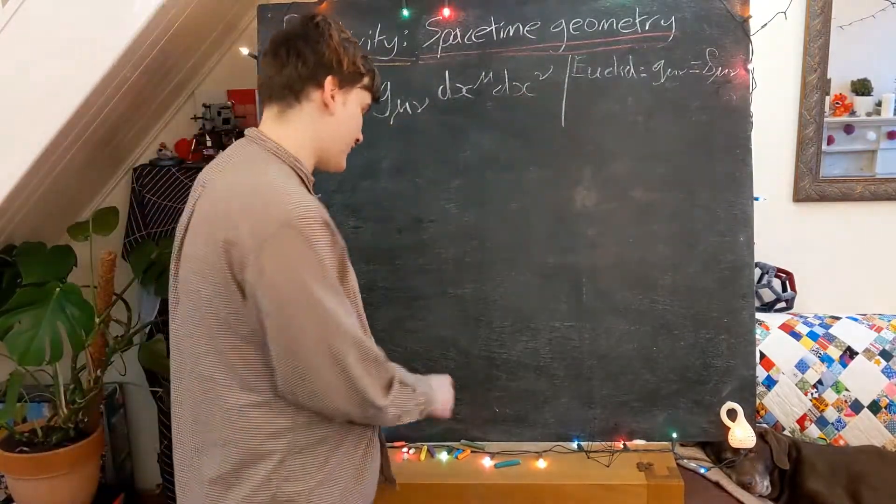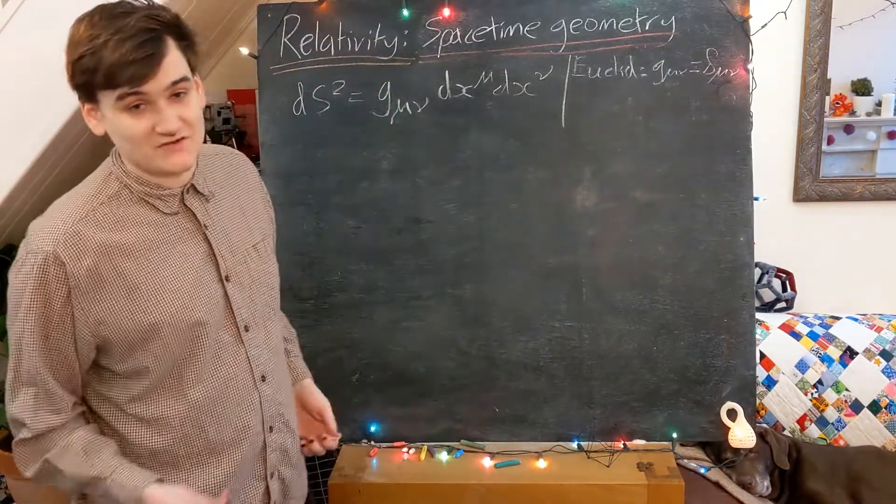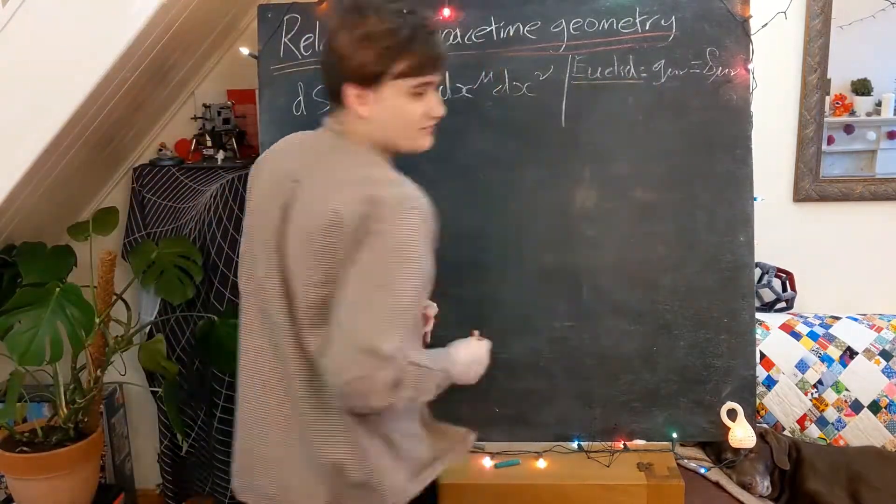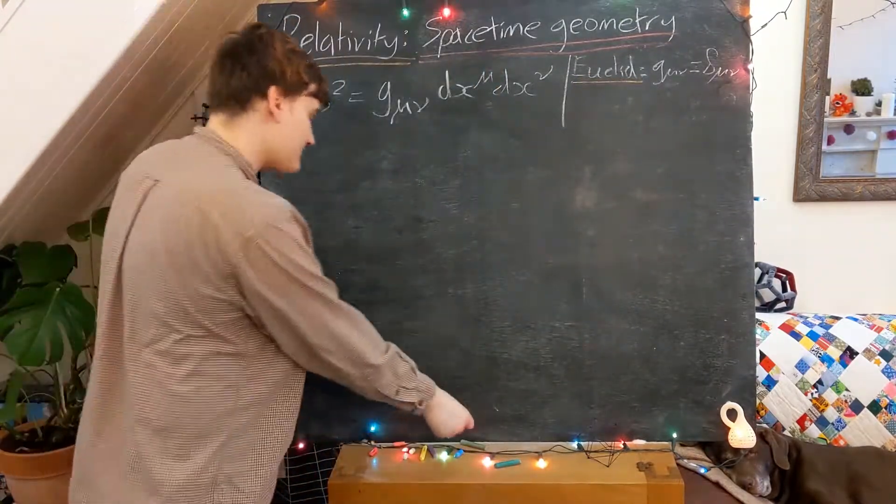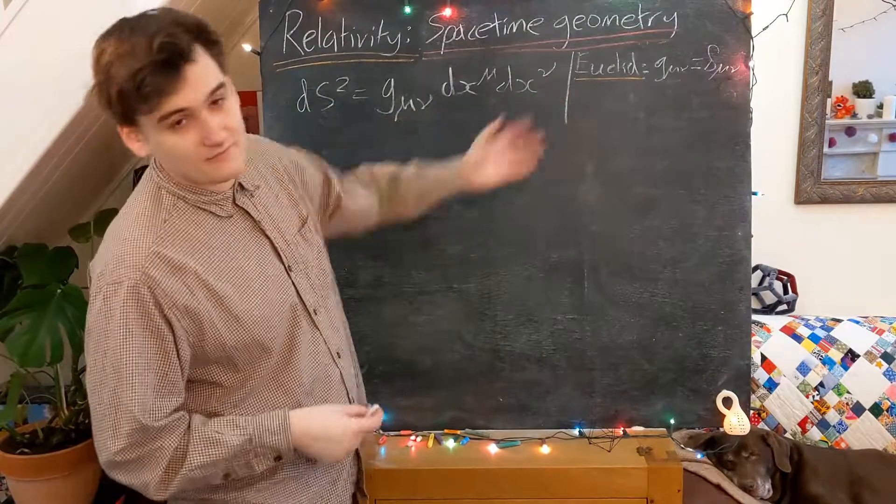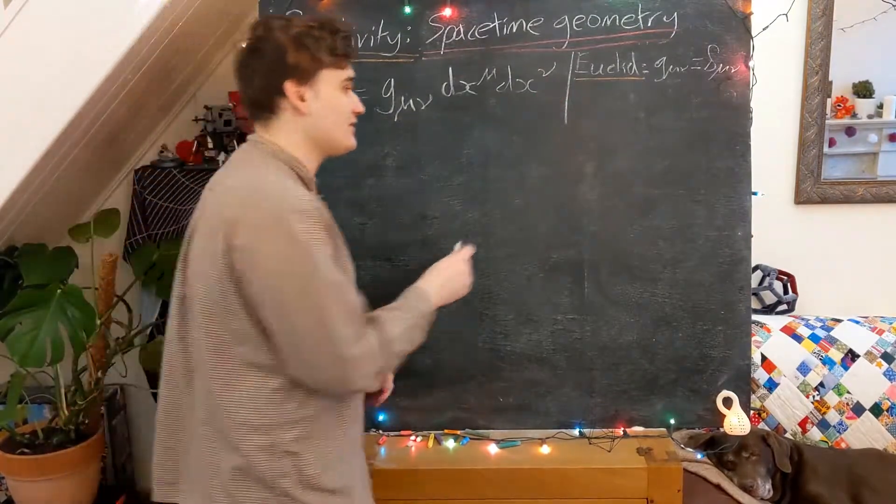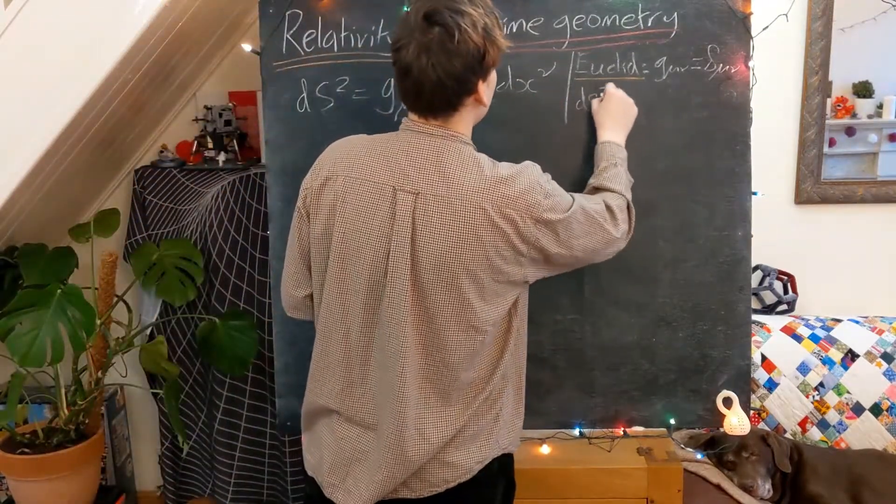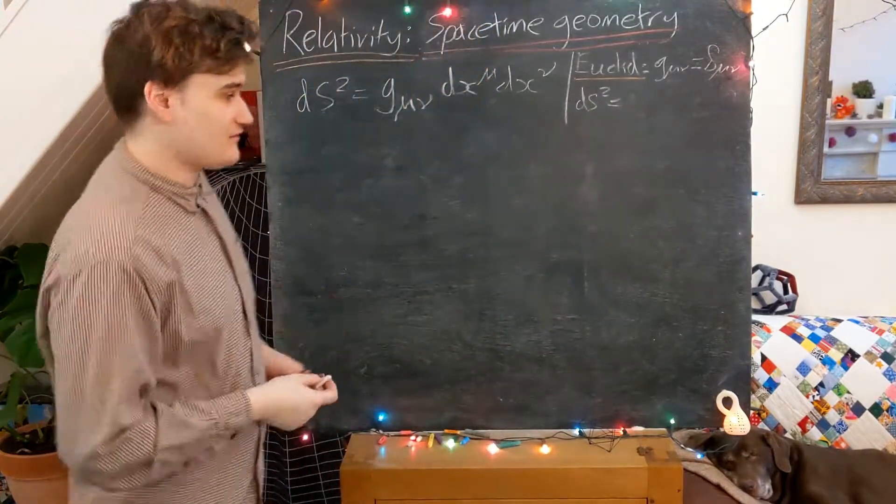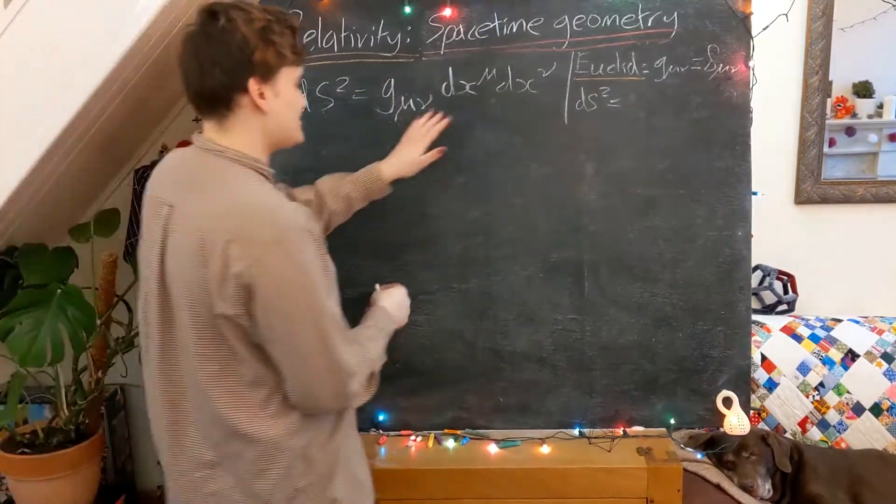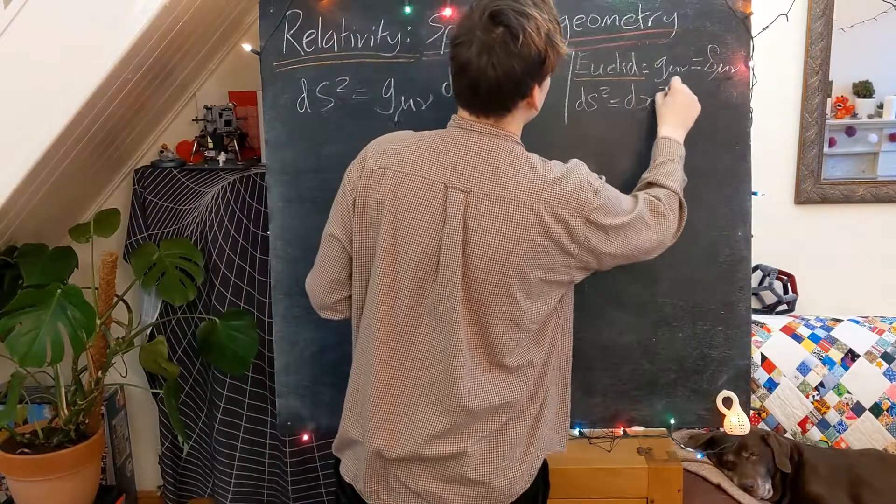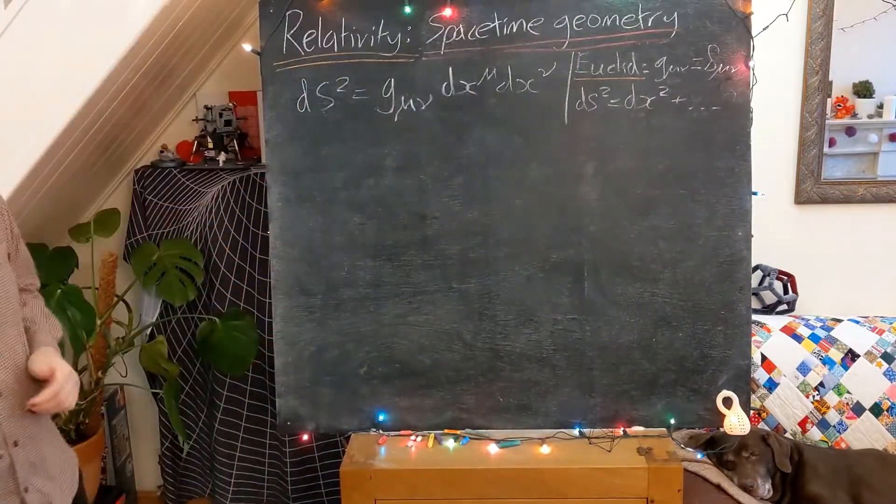This is just essentially a way of writing the identity matrix in a more tensorally useful way. So the Euclidean metric being the identity just simply gives us a fairly simple line element, which is just the sums of the squares of each of these dx's, dx squared plus dy squared and so on.